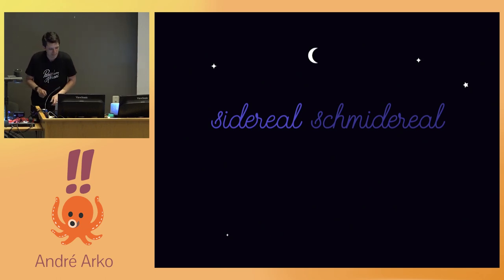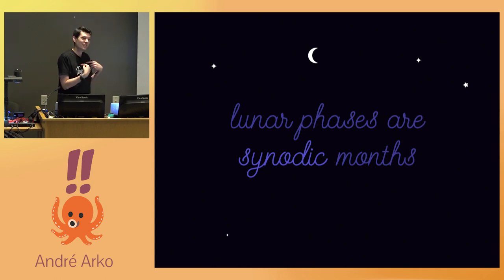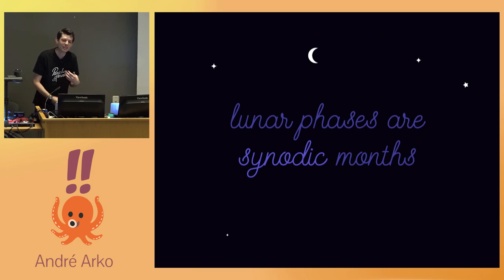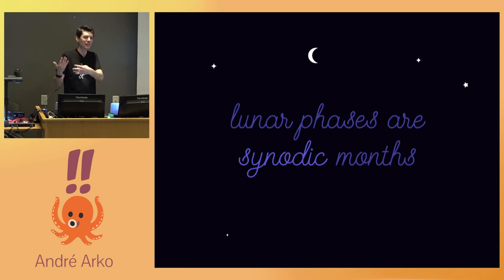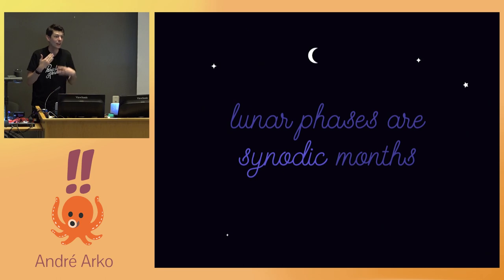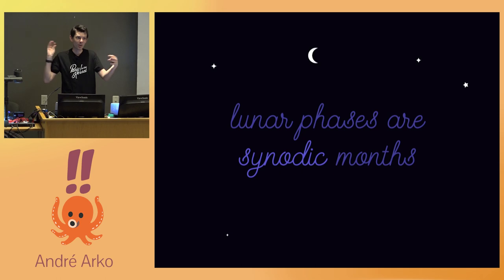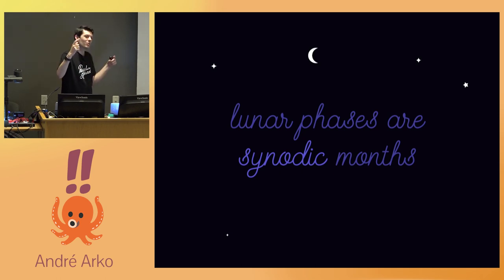The phases that we see on the moon are synodic months — that is the amount of time it takes for the moon to return to the same position relative to the earth and the sun. Obviously the sun is the important part, because that is where the light we see reflected on the moon, that makes the phases, comes from. Synodic months and sidereal months are different lengths, not just because the sun matters, but because the earth is moving around the sun while the moon moves around the earth, and neither of those orbits are circular — they're both elliptic.